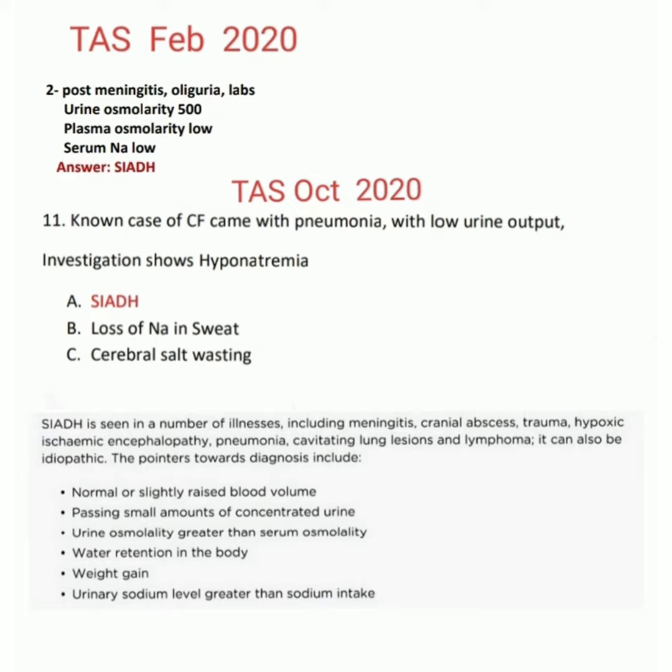Diagnostic pointers also include: passing small amounts of concentrated urine, urine osmolarity greater than serum osmolarity, water retention and weight gain in the body, and urinary sodium level greater than sodium intake. So both question answers are SIADH — Syndrome of Inappropriate Antidiuretic Hormone.